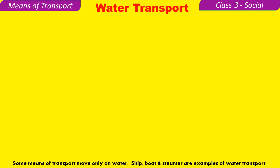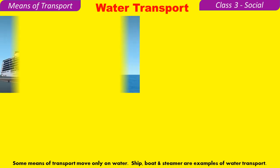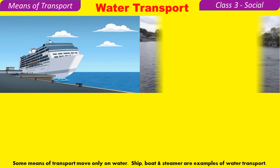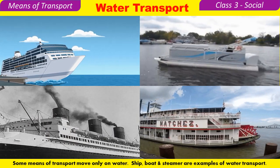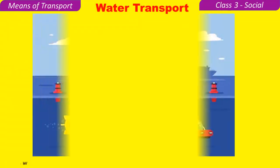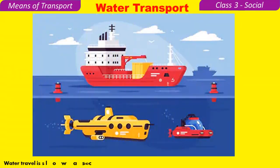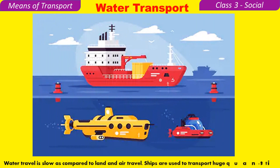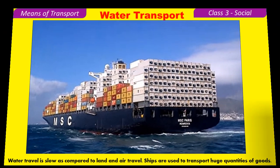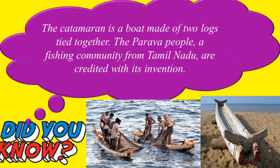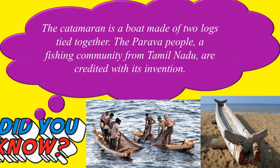Water transport — some means of transport move only on water. Ships, boats, and steamers are examples of water transport. Water travel is slow compared to land and air travel. Ships are used to transport huge quantities of goods.